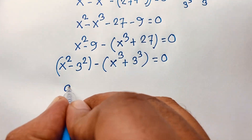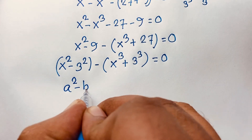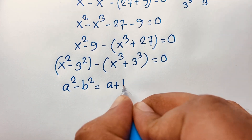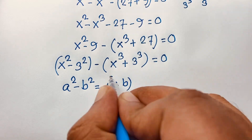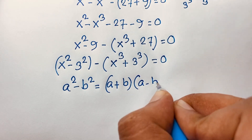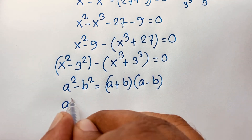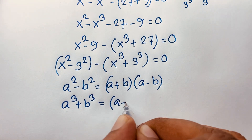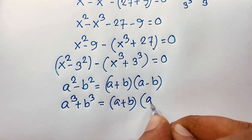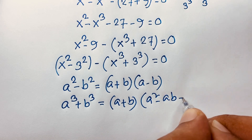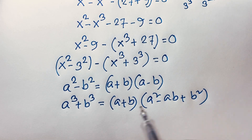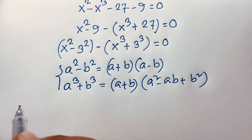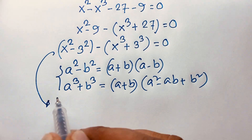Now I can see here we have a² minus b², which factors as (a+b)(a−b), and the other formula: a³ plus b³ equals (a+b)(a²−ab+b²). I will apply both formulas here.